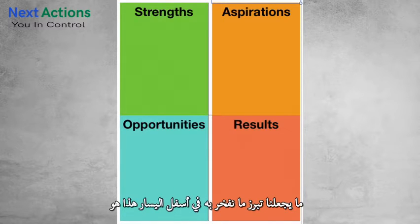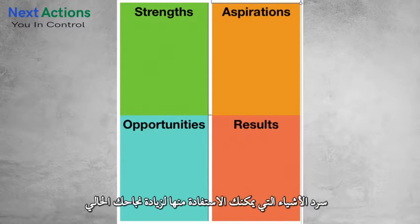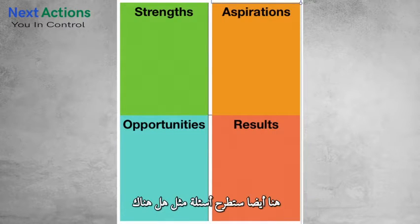In the strengths section, you'll be asking questions like: what do we do well? What have we accomplished? What makes us stand out? What are we proud of? The bottom left is the opportunities section — these are the things you can see coming up, where you list things you can leverage to increase your current success. You're focusing on things you can improve, like profitability and market share.